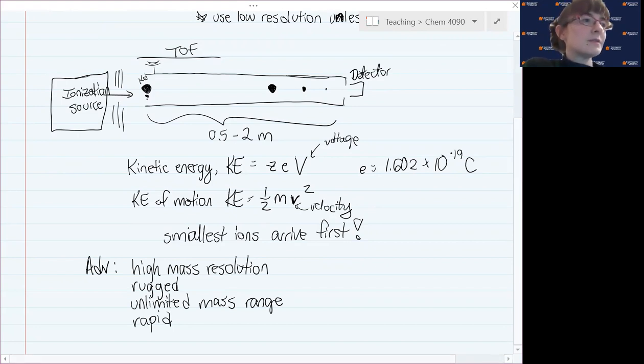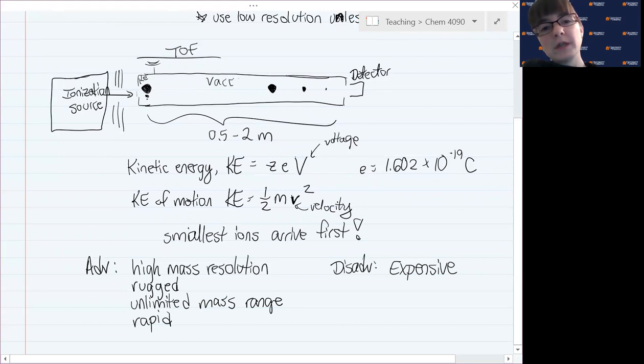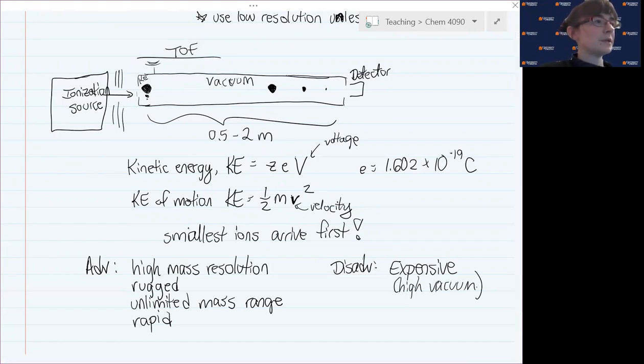The disadvantage is this tends to be a little more expensive. We have to be able to maintain a very low pressure in here. This is all under what we would call high vacuum so that those molecules can move through the tube without colliding with anything. We need really good vacuum pumps to be able to keep this going, and that drives up the cost of it. That's it for time of flight for what we need to know.